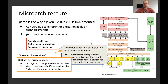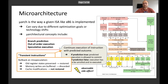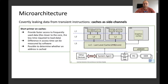If a rollback happens on this speculation, a few things need to be restored. Old register states are preserved in the CPU and are properly restored. Memory writes are buffered and can be discarded. However, cache modifications are not restored. And because of that, we can have an observable side effect, which we can use as a side channel to leak data.